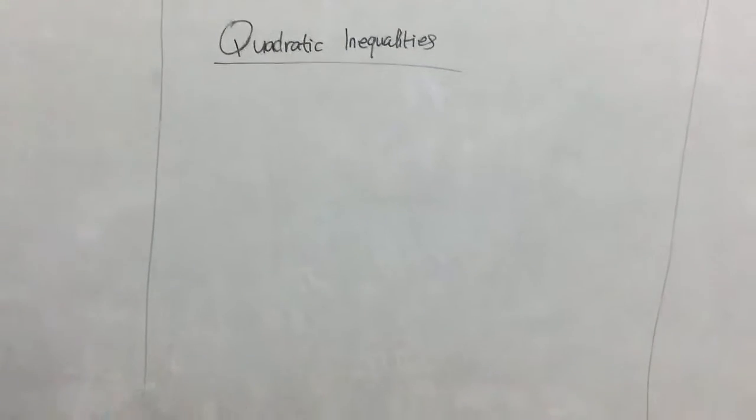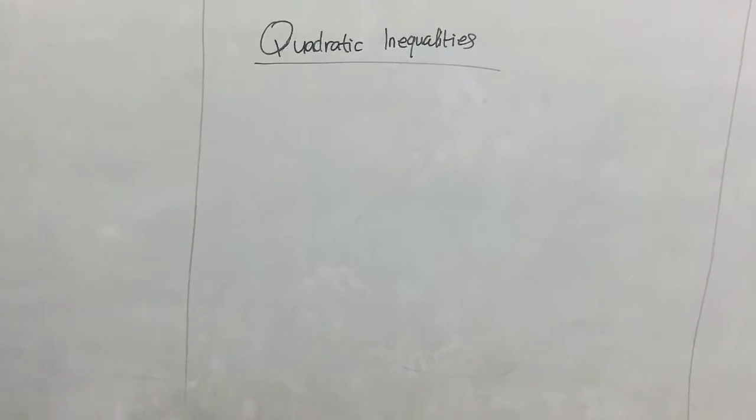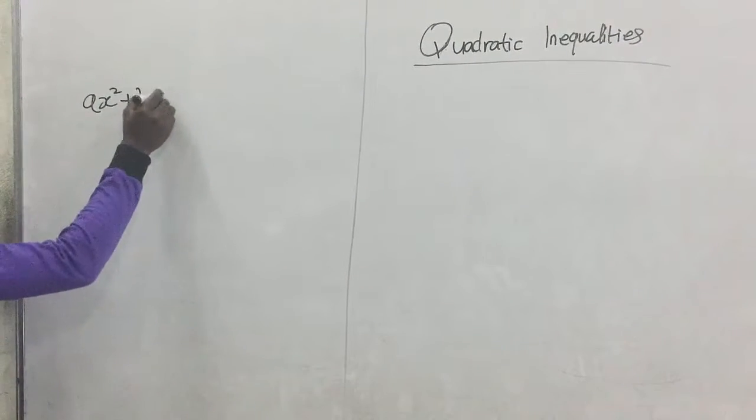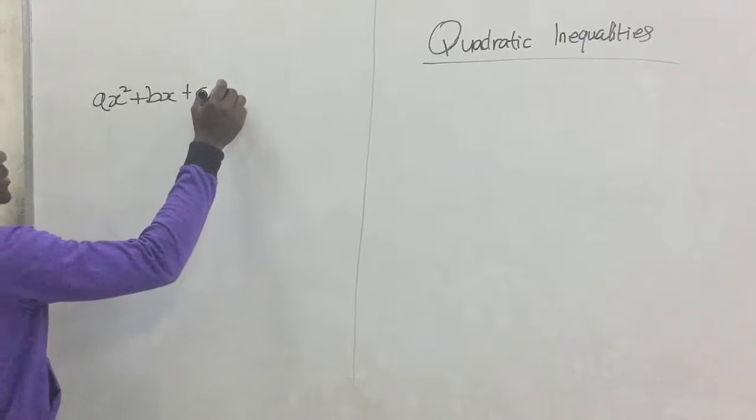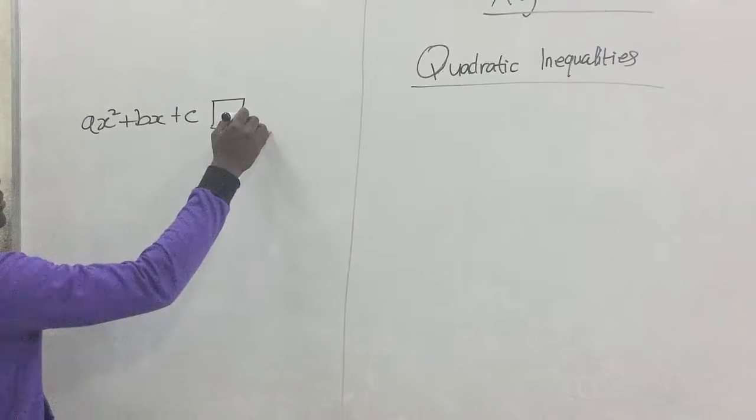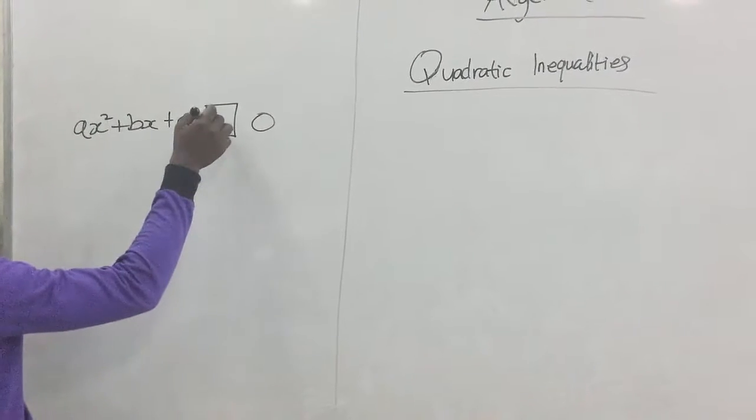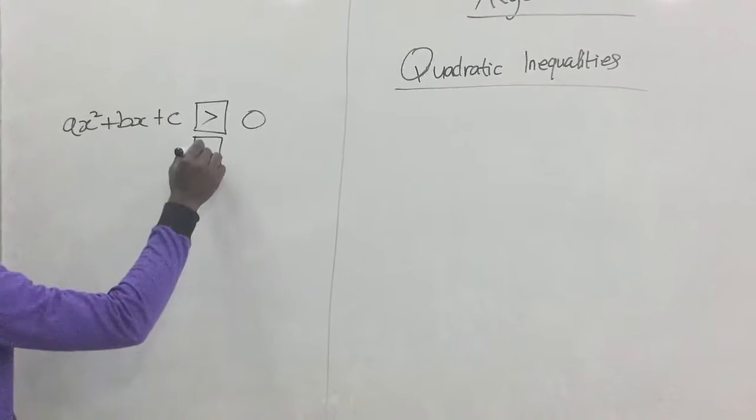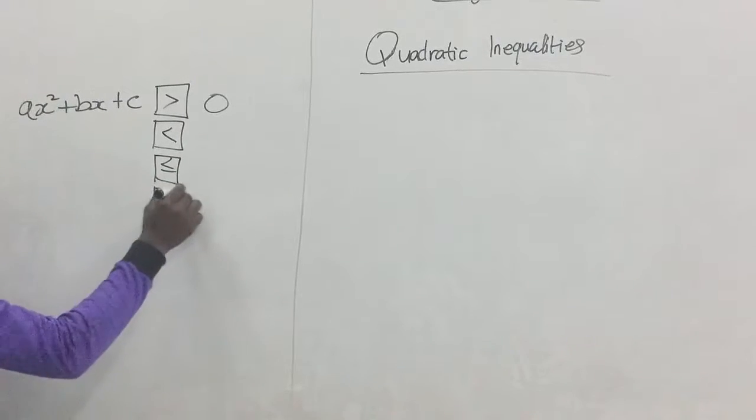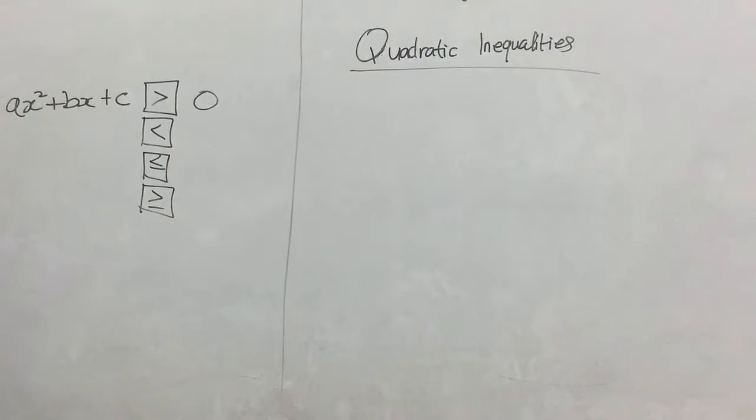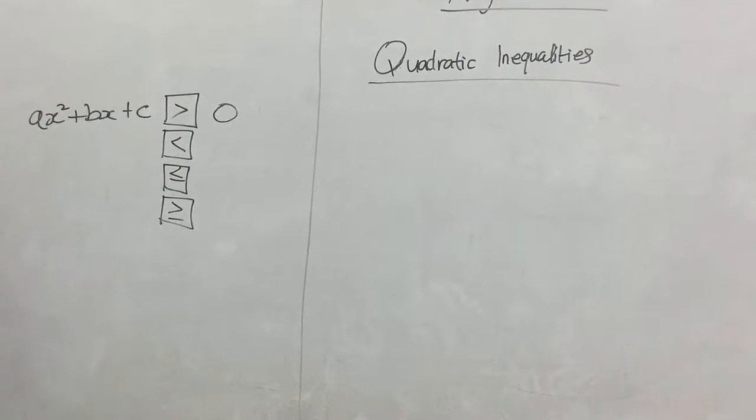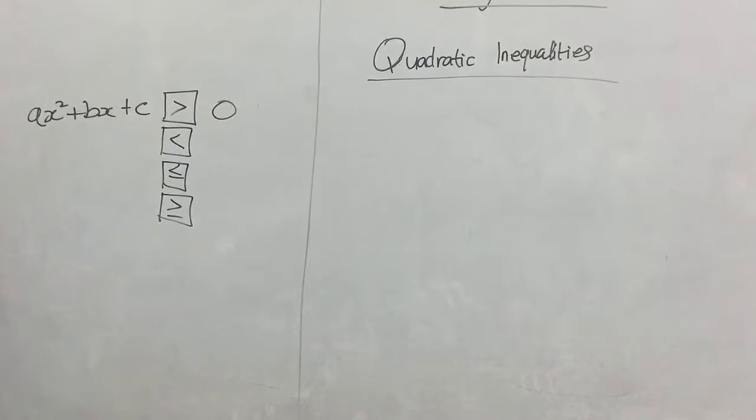Now, quadratic inequalities are expressions of the form with less than, less than or equal to, greater than or equal to. Any of these four inequality signs can be assigned instead of an equal to sign. That's why we say quadratic inequalities.